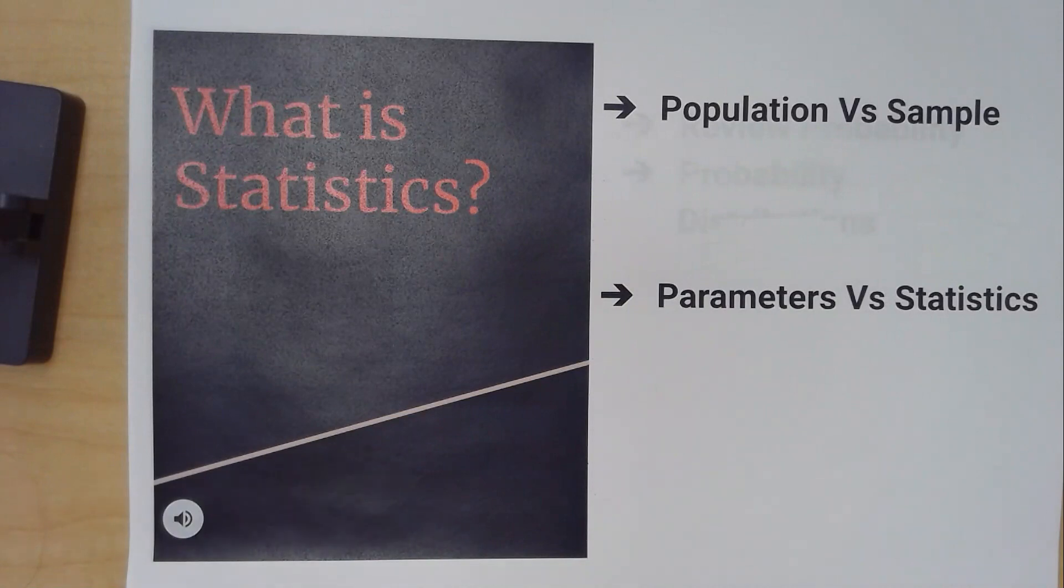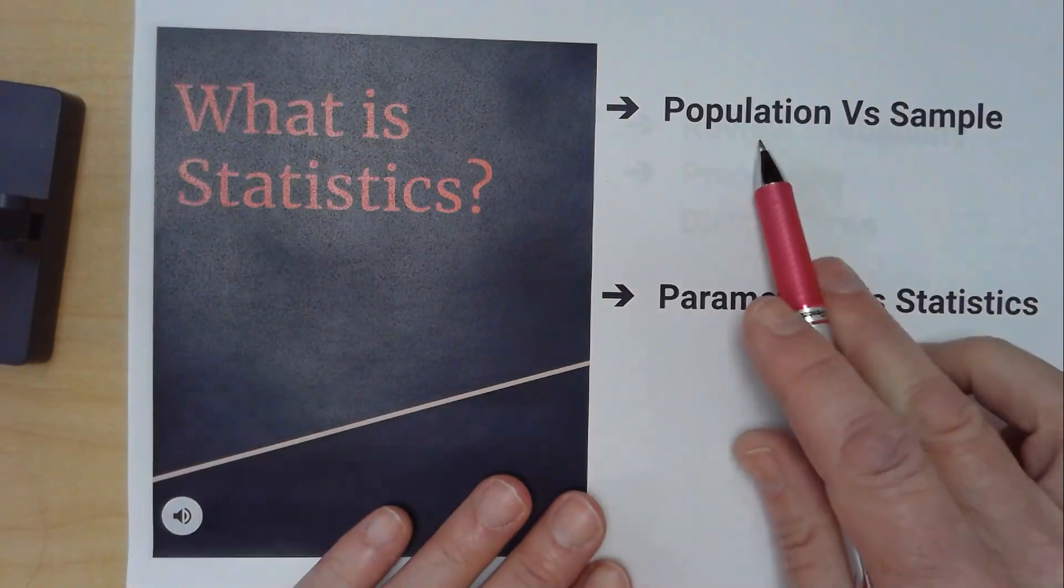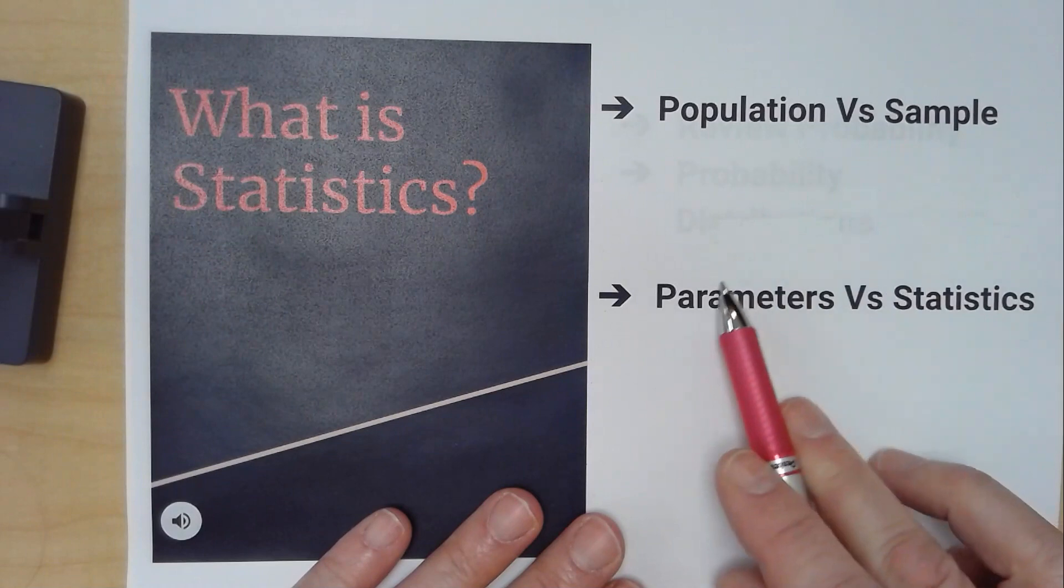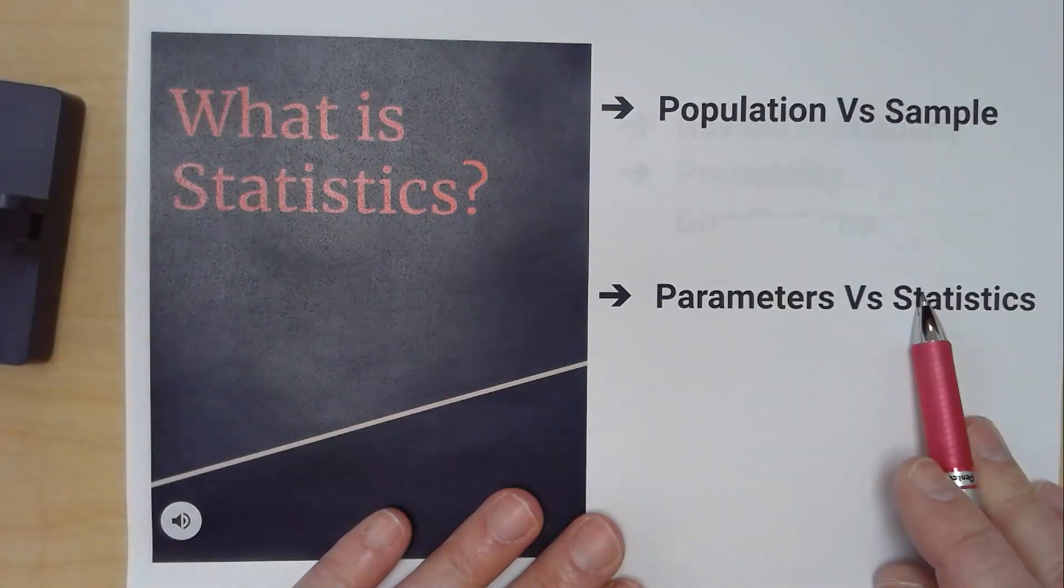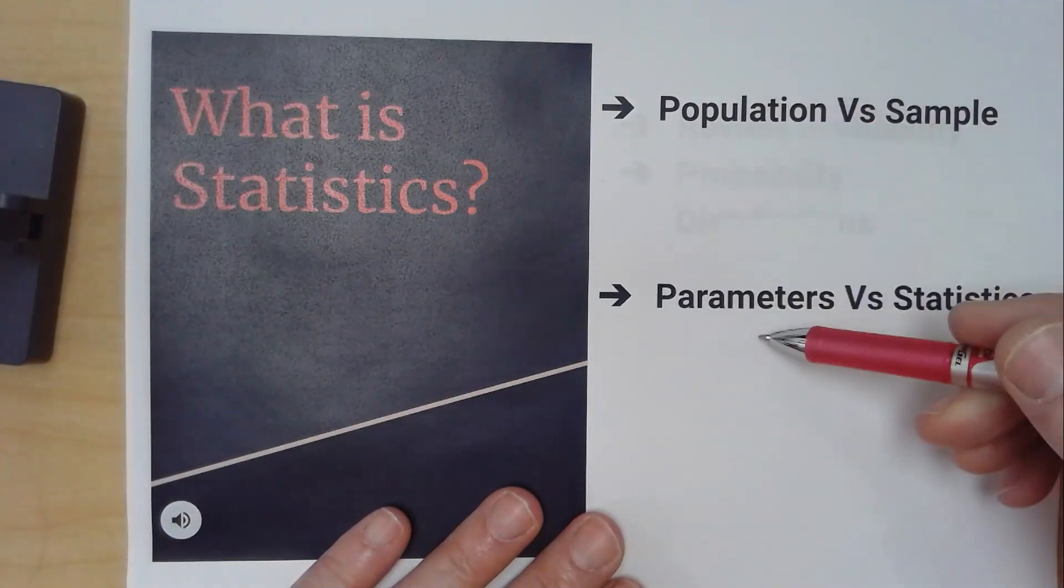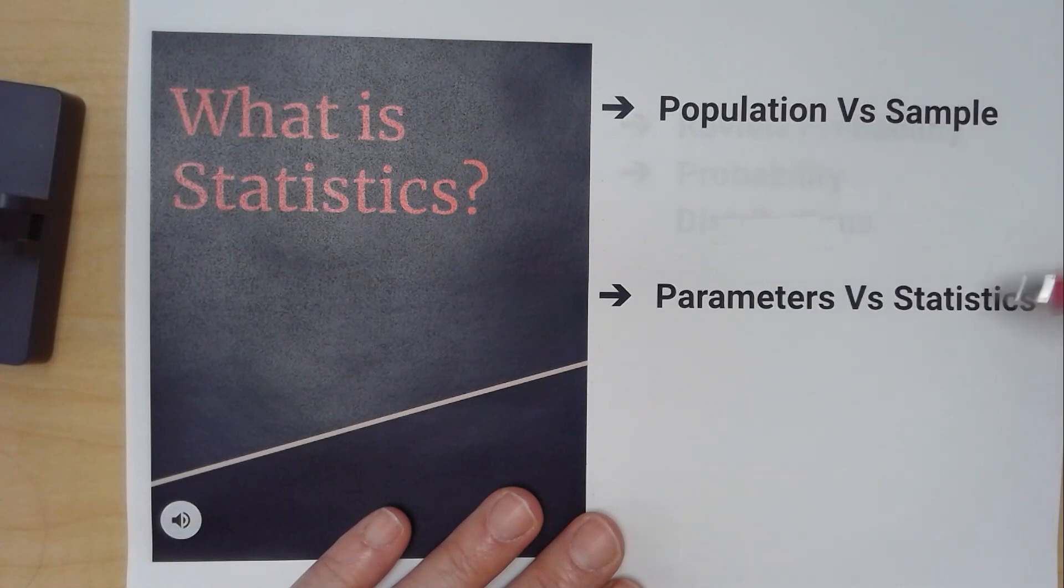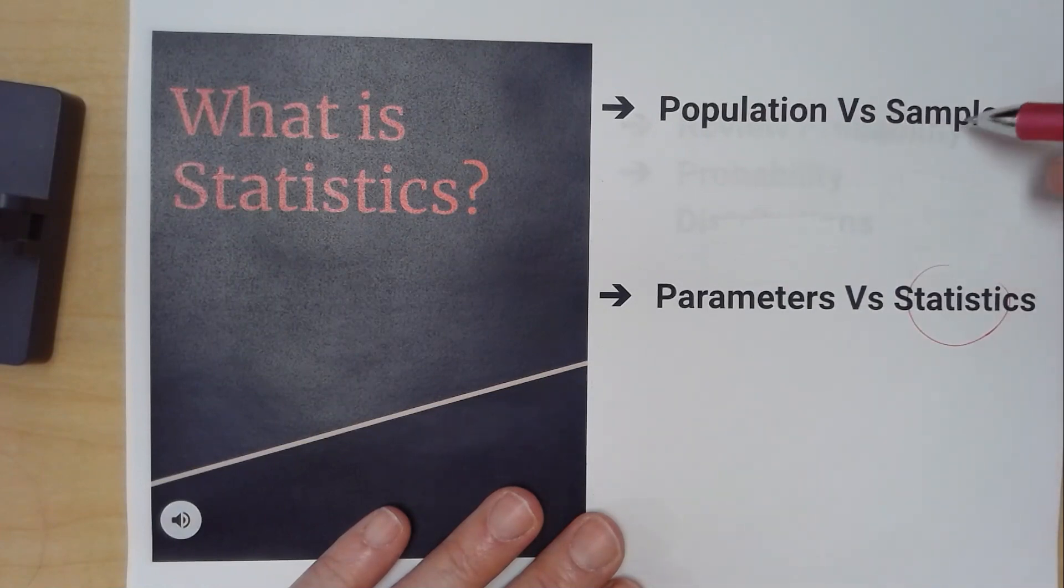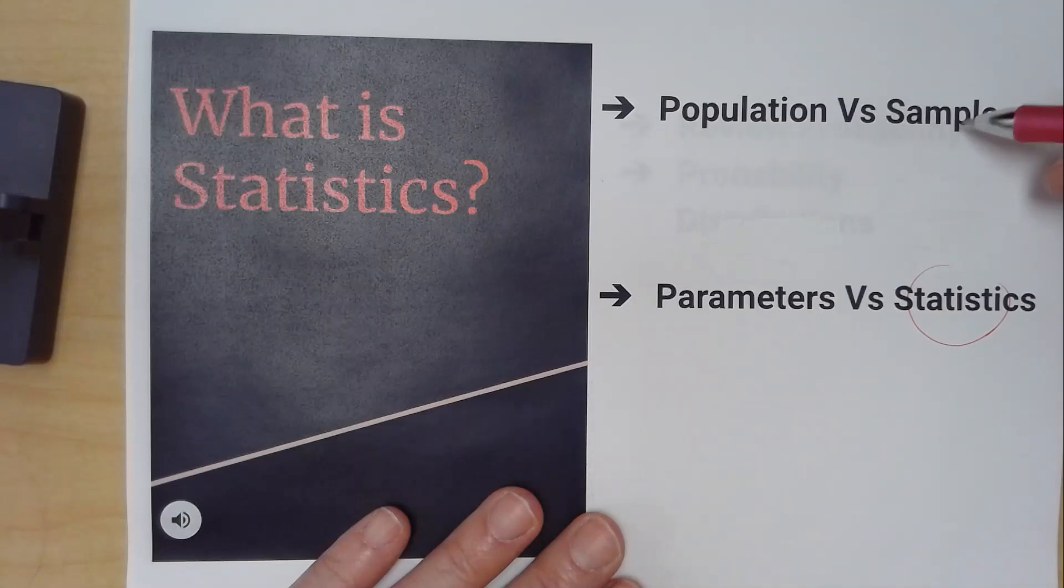So what is statistics? Well, here's how I teach it. Population versus sample, parameter versus statistics. P goes with P, S goes with S. So statistics are related to samples. Samples are a smaller part of the population.